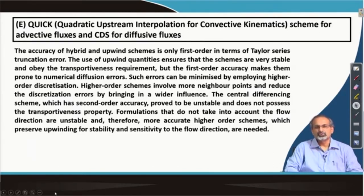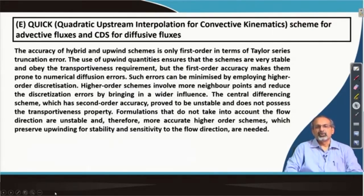We also saw, by analyzing the coefficients of QUICK, that there could be numerical instability problems. So if we were to extend this problem to a 2-dimensional problem, how would numerical schemes like QUICK or the first-order upwind scheme, which we have already discussed, work?